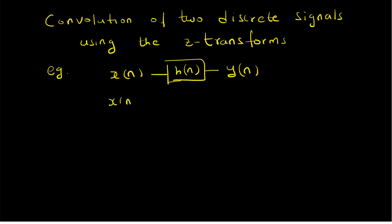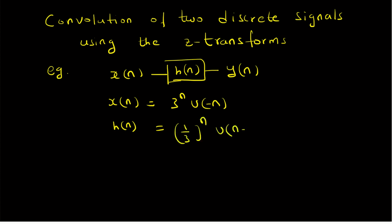We are given X of n as 3 power n times U of minus n — so clearly that is not a causal signal. And H of n, the unit sample response, is given by 1 by 3 power n times U of n minus 2.